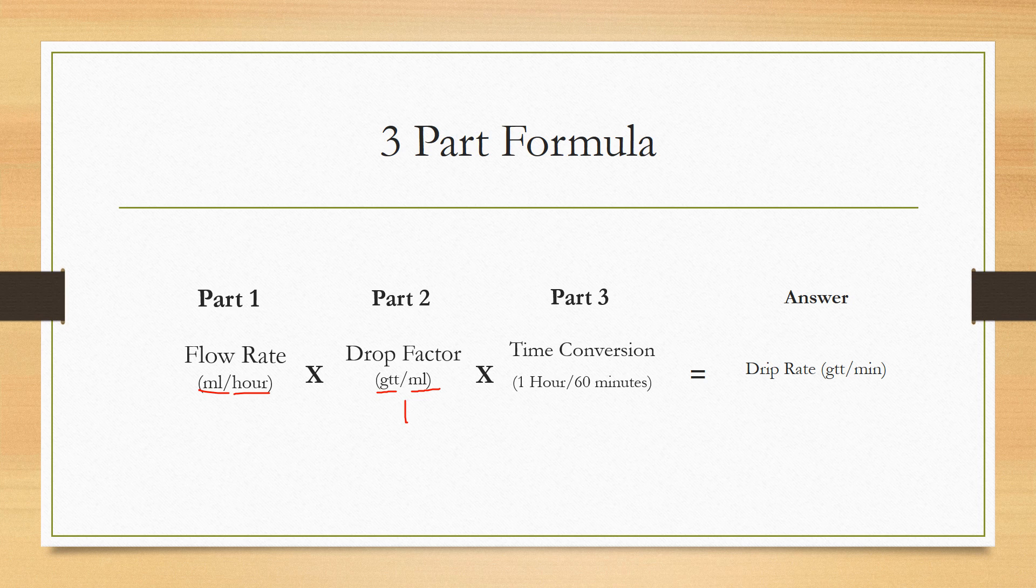And it gives you the answer in the correct units, which is drips per minute. That's going to be what you want your answer to be in. That's what the drip rate is. It's how many drips per minute you're going to see going through that chamber we saw earlier in order for the flow rate to be correct.